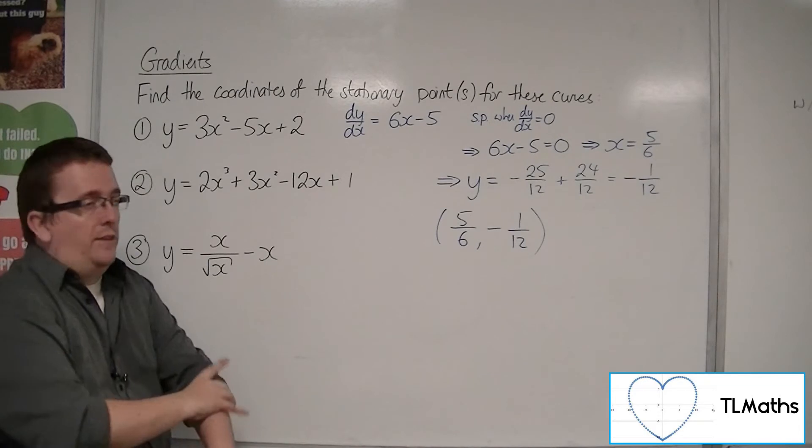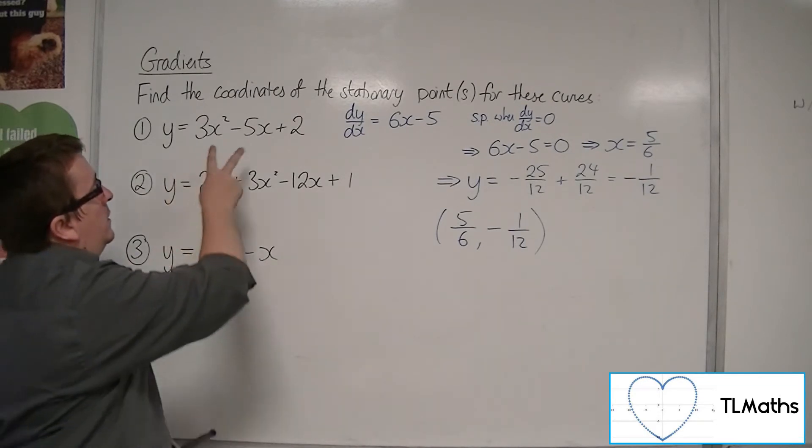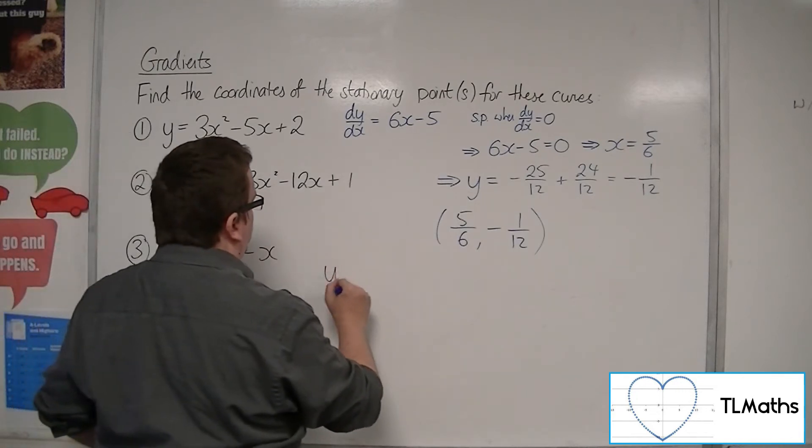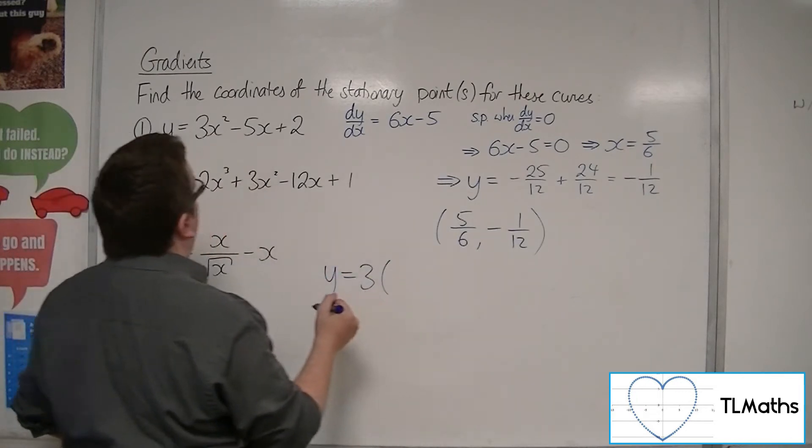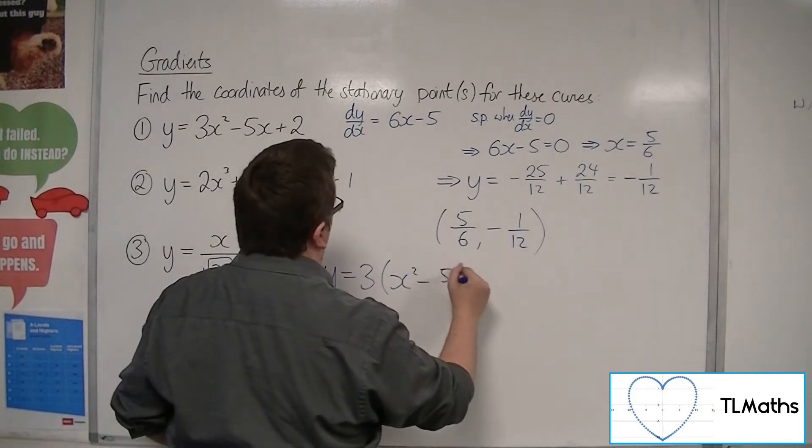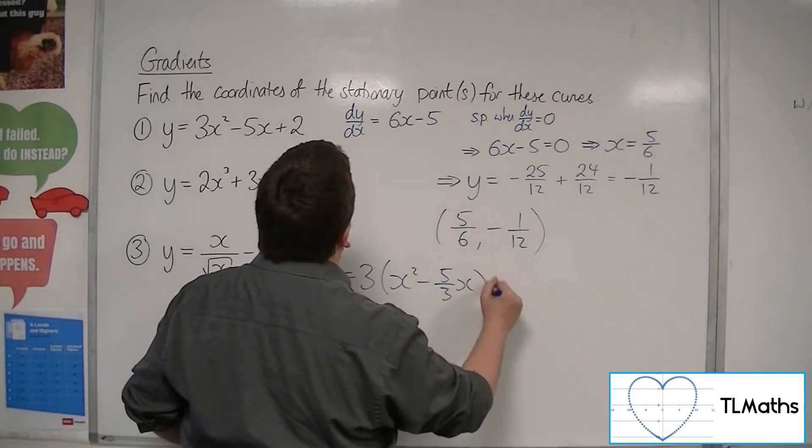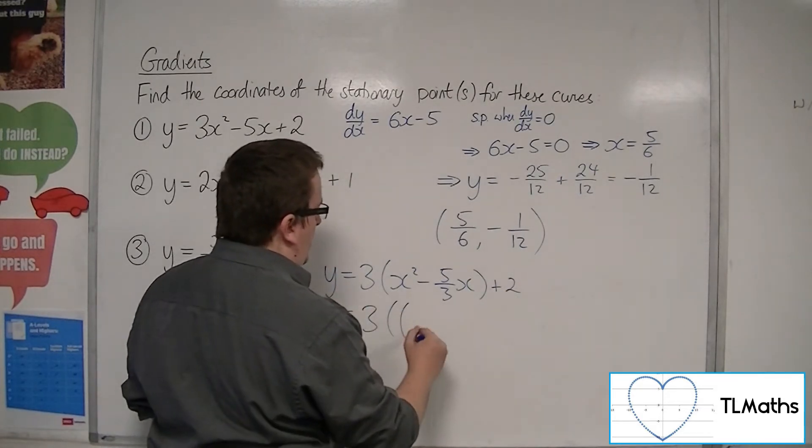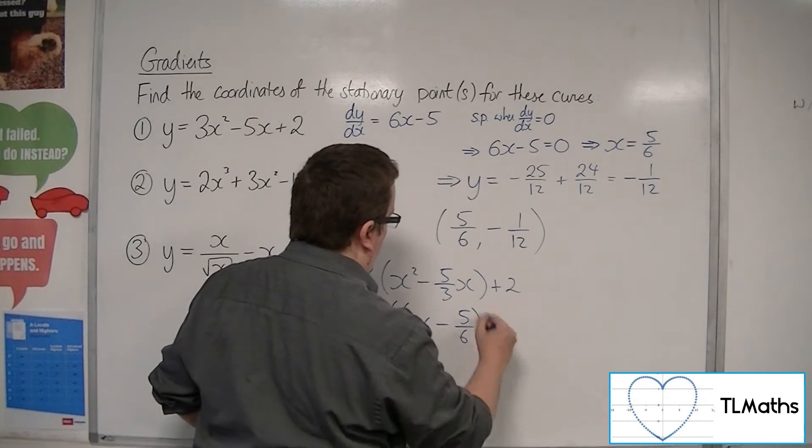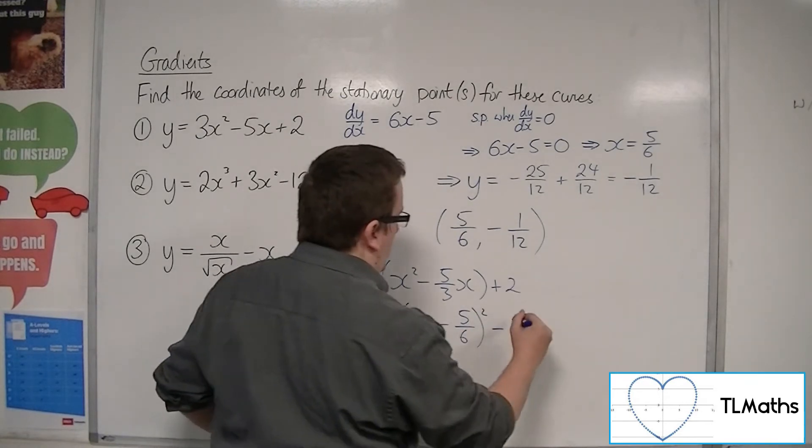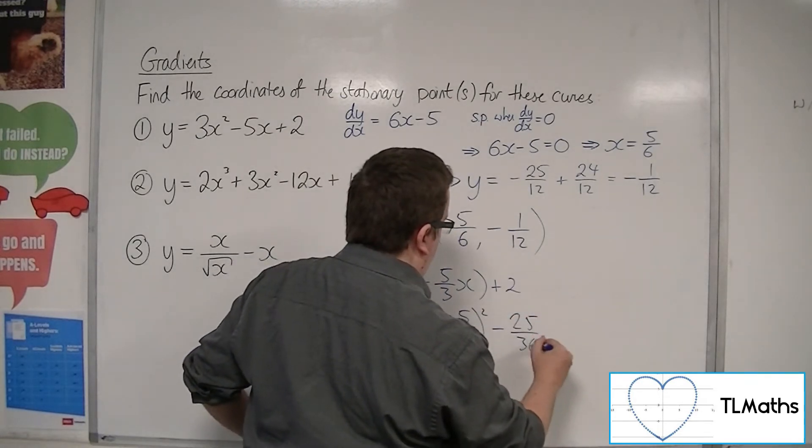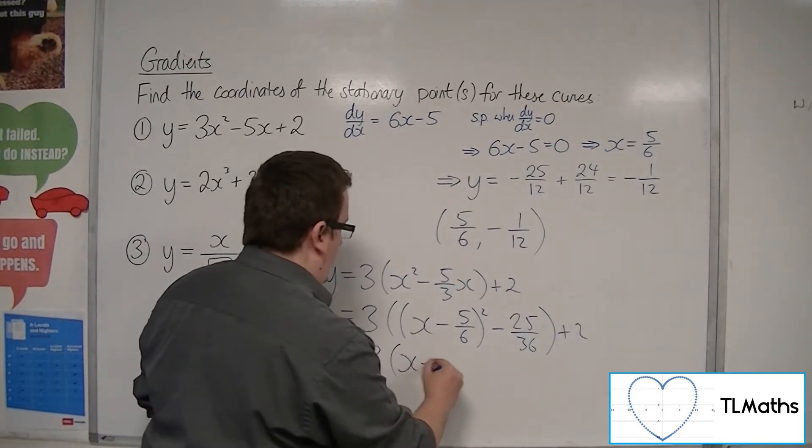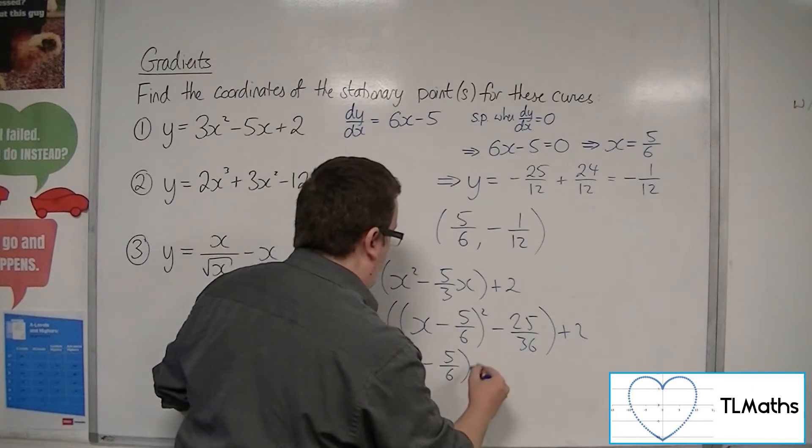Now you should get the same result by completing the square on that. So very quickly, if we factor the 3 out of the first two terms, x squared minus 5 thirds x plus 2, then complete the square on the inside. So x take away 5 sixths squared, take away 25 over 36, plus 2.